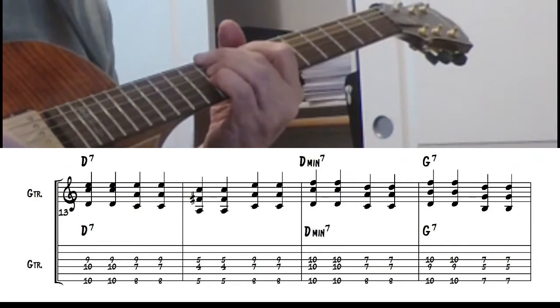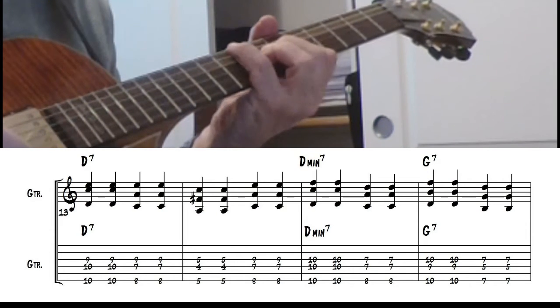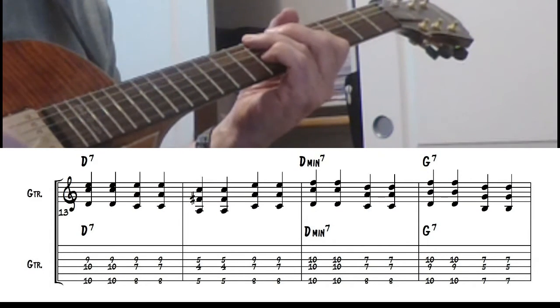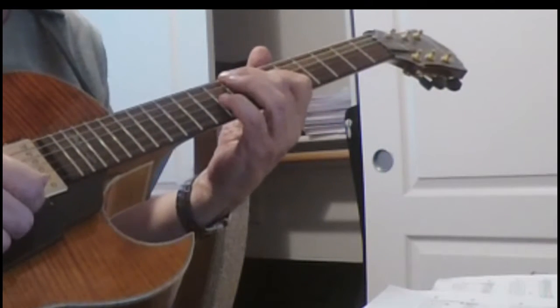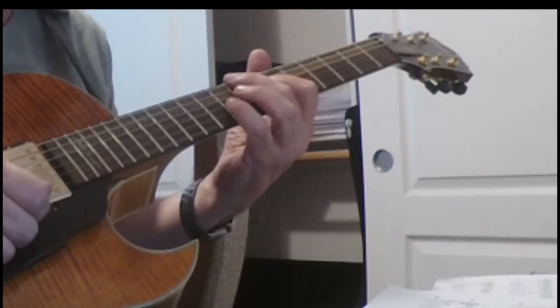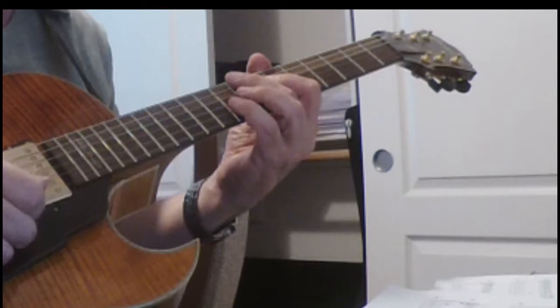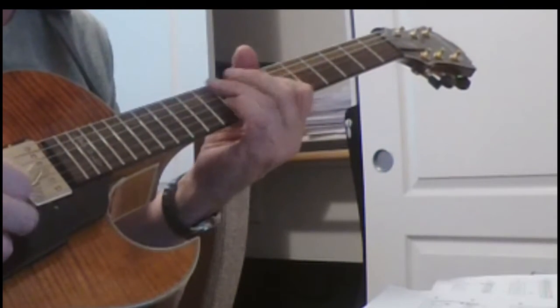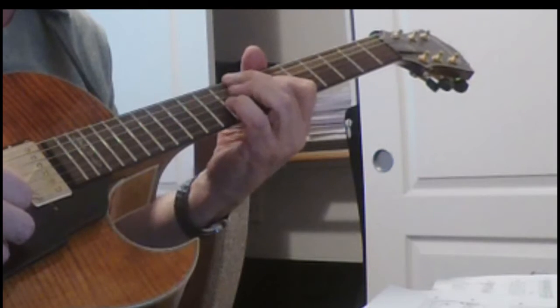D minor 7, inverting down. Back up to G7. Inverting down. You'll notice a lot of these shapes work on more than one chord. Like the C6 and the A minor 7 are always going to be the same voicings.